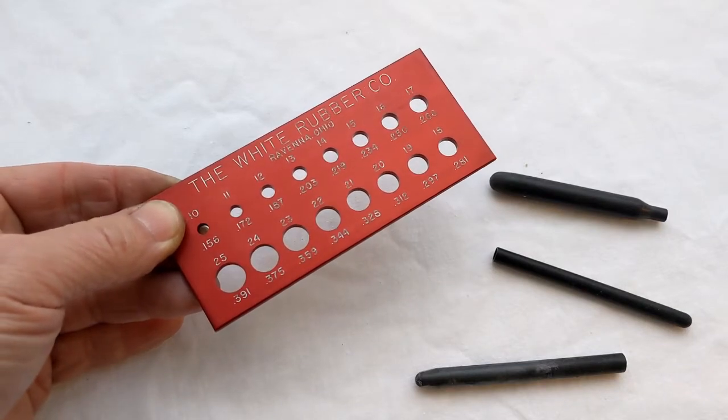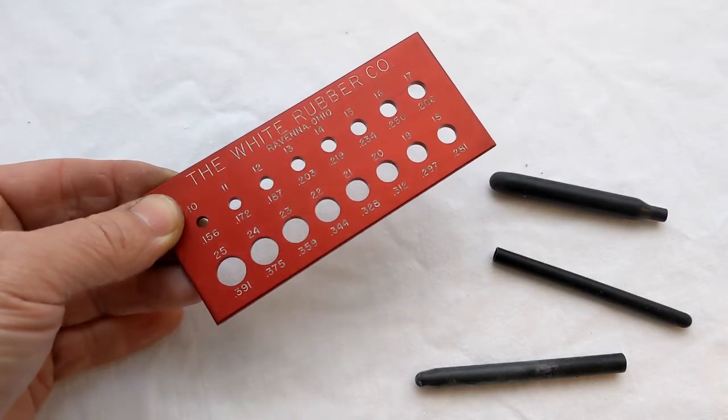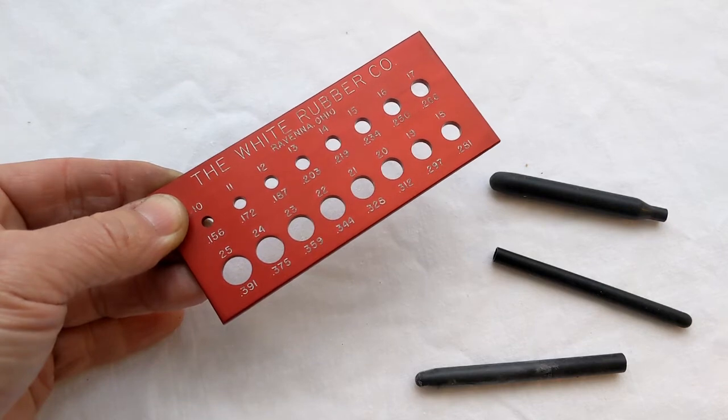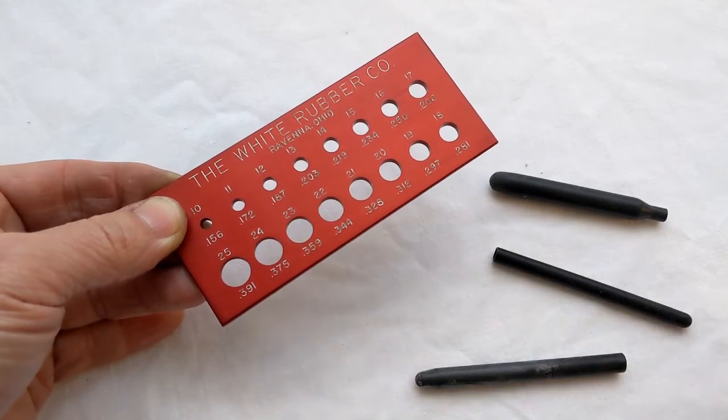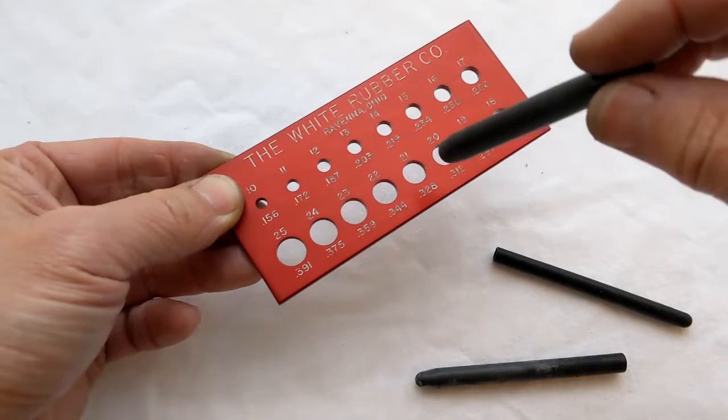It's fairly self-explanatory. There's a series of holes labeled with the sac size number that goes through them. As a reminder, the number of the sac refers to the hole size in 64ths of an inch. And this sac, for example, we'll test it.